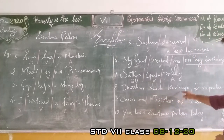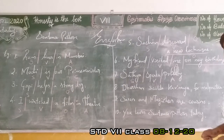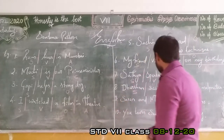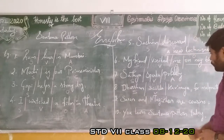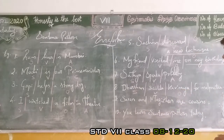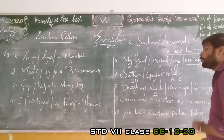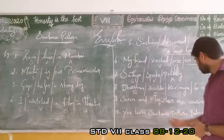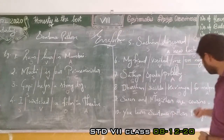Eighth sentence: 'Darshan scolds Kavinaya for malpractice.' Doer of the action is Darshan — subject. What is the action? Scolds — verb. Whom does he scold? Kavinaya — object. Why he scolds — for malpractice. The reason for the scolding answers the question 'why,' so it is adjunct.